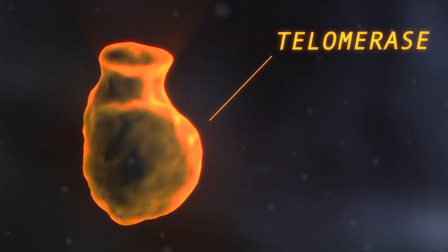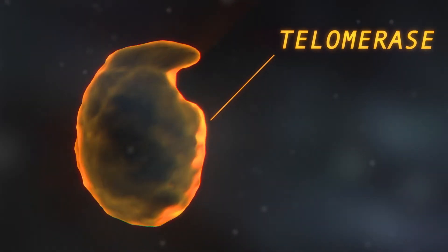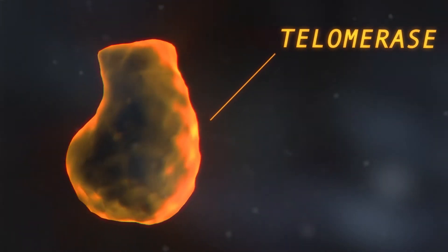The key to keeping our cells young might be a protein called telomerase. This incredible enzyme holds clues to how our bodies age and why we develop diseases like cancer.